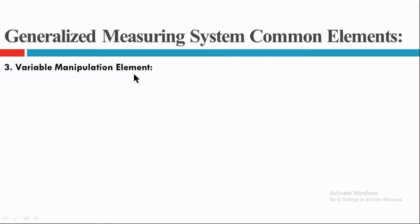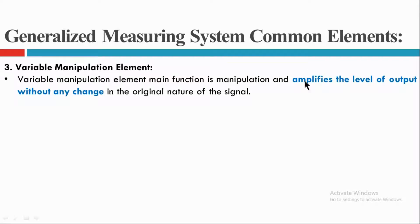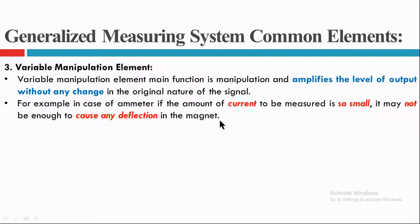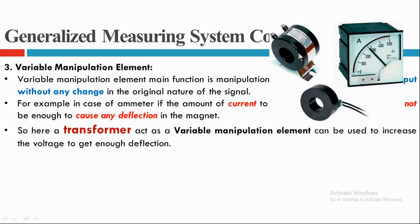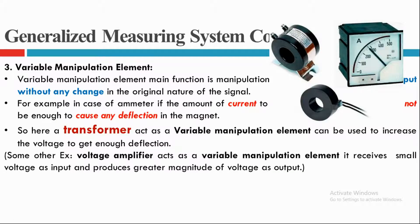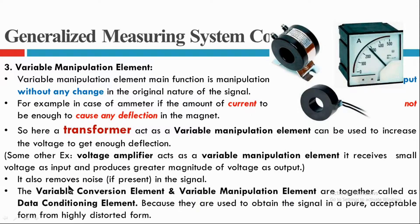The next element is the variable manipulation element. Its main function is to amplify the level of output without any change in the original nature of the signal. For example, in an ammeter, if the amount of current is very small, it may not cause any deflection in the reading. So a transformer is used as the variable manipulation element to increase the voltage, which then makes a deflection in the magnet. A voltage amplifier can also act as a variable manipulation element in some instruments. This element is also used to remove noise from the signal. The variable conversion and variable manipulation elements together are called the data conditioning element, as they obtain the signal in a pure and acceptable form.